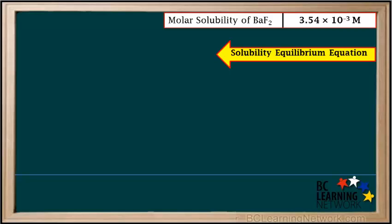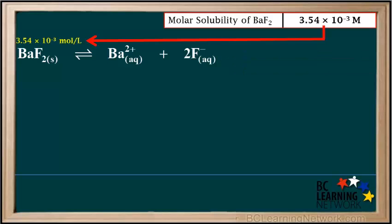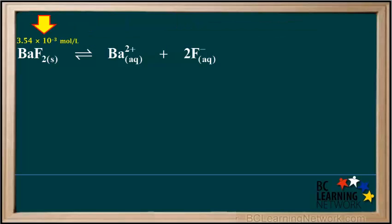Now we can proceed to find the Ksp. We start by writing the solubility equilibrium equation for BaF₂: BaF₂ → Ba²⁺ + 2F⁻. We place the molar solubility above BaF₂ in the equation. This means that 3.54 × 10⁻³ moles of BaF₂ will dissolve in one liter of solution. We use this and the mole ratios in the balanced equation to calculate the concentrations of Ba²⁺ and F⁻ in a saturated solution.